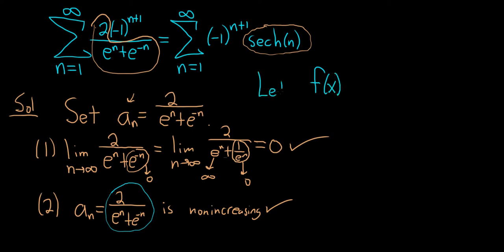So the way to do it formally is to redefine your sequence as a function of x. So you let f of x be equal to 2 over e to the x plus e to the negative x. And now you have to show that the derivative of this function is negative. That would mean that the function is decreasing, which in other words is non-increasing.